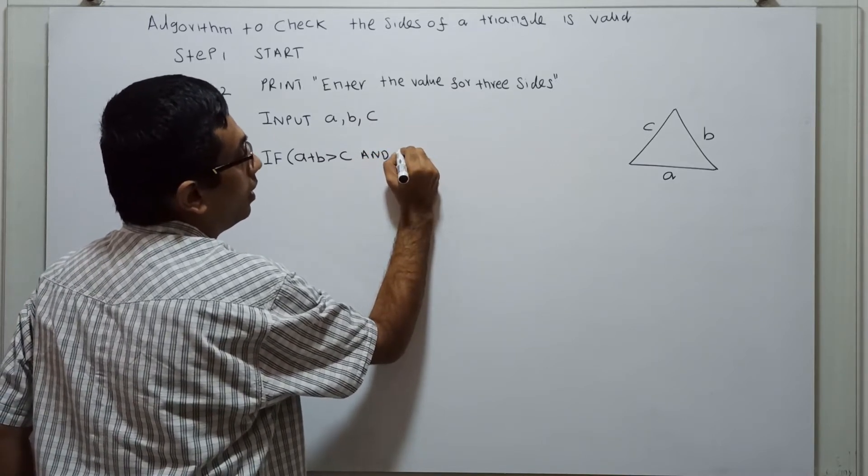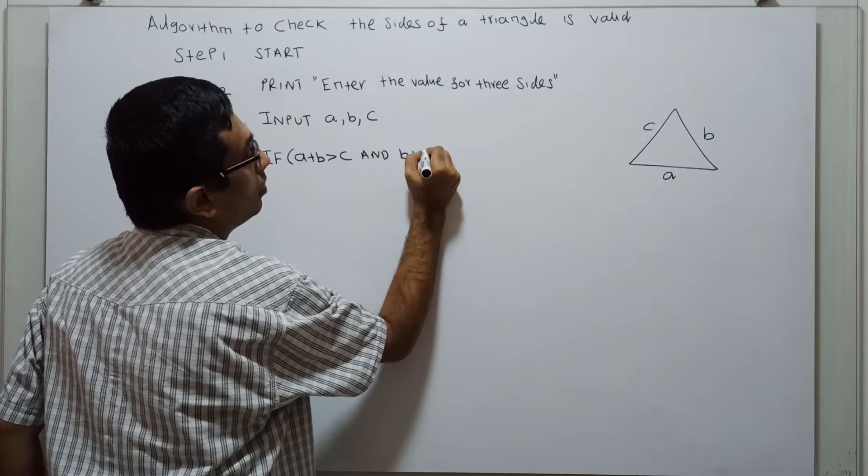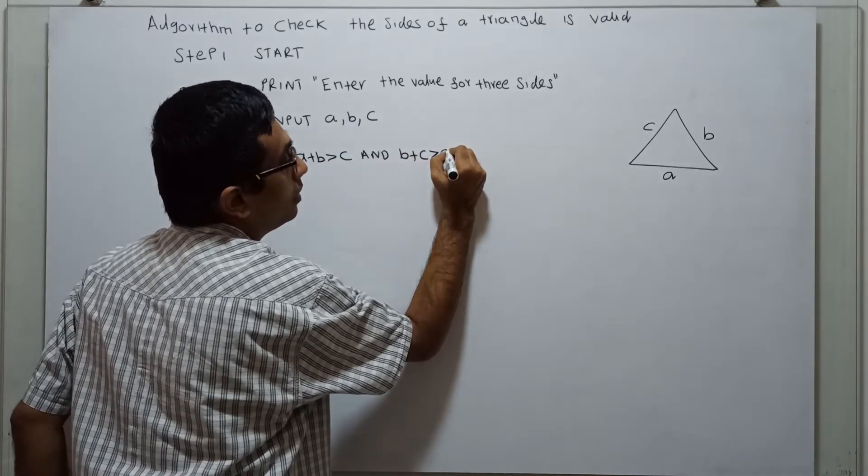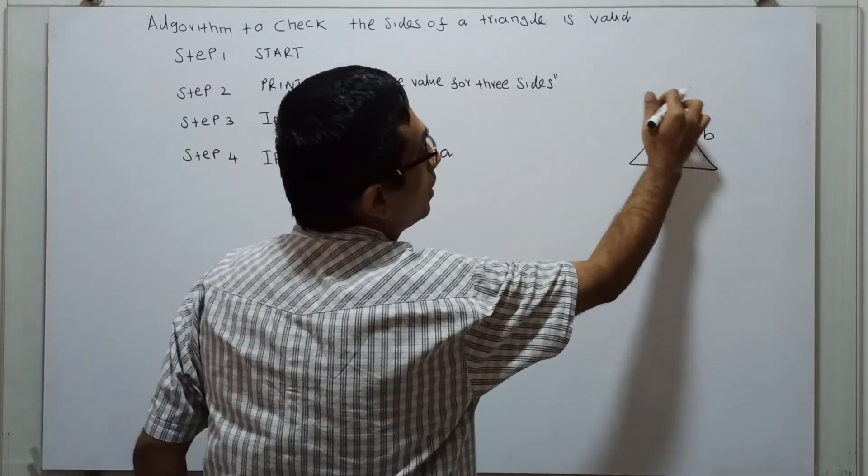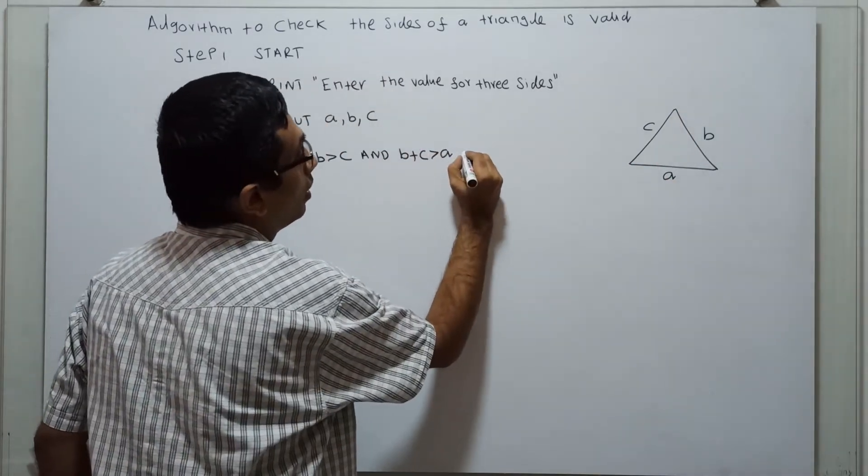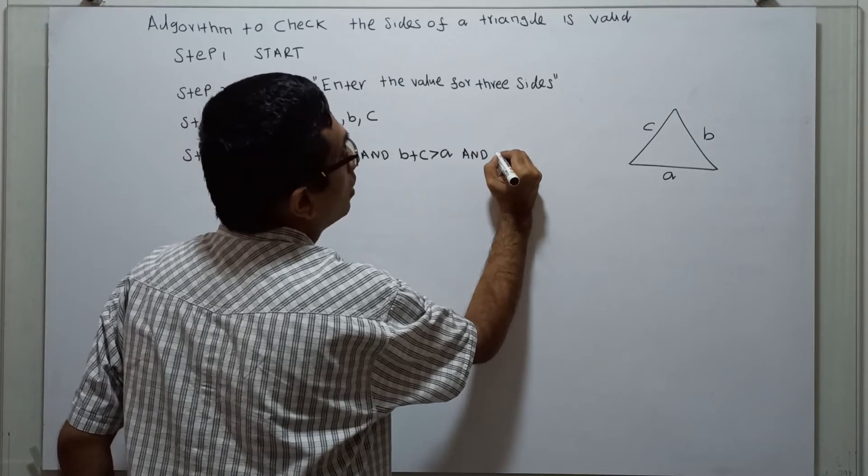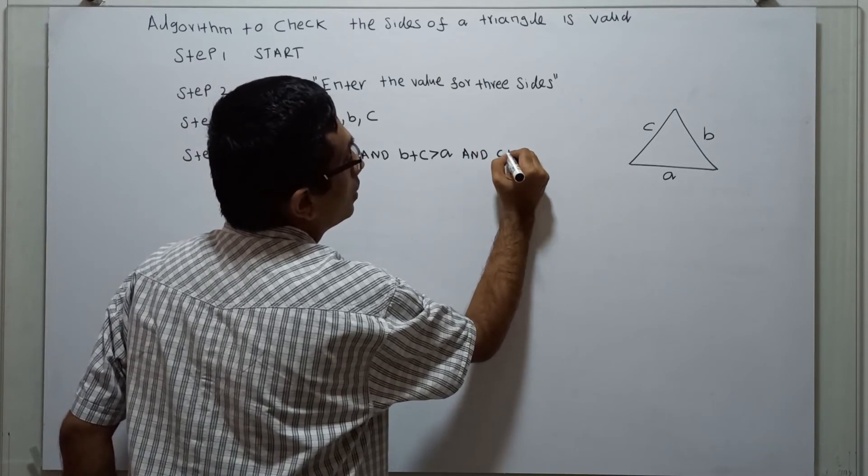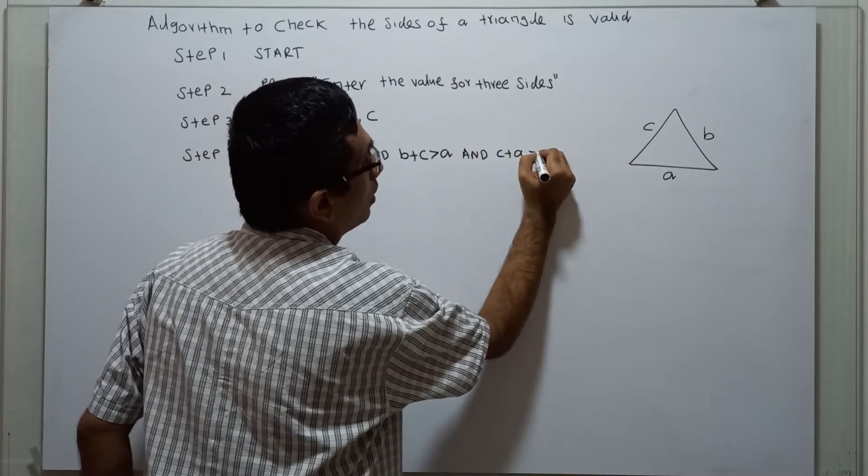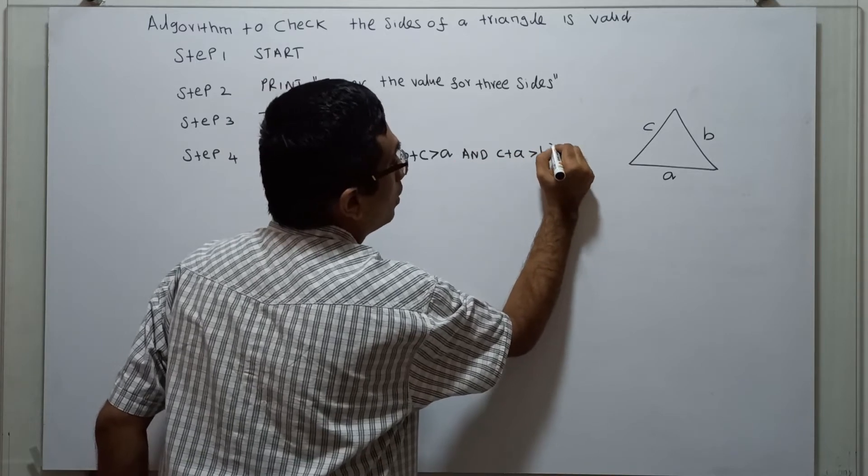And B plus C greater than A. And C plus A greater than B. Very simple.